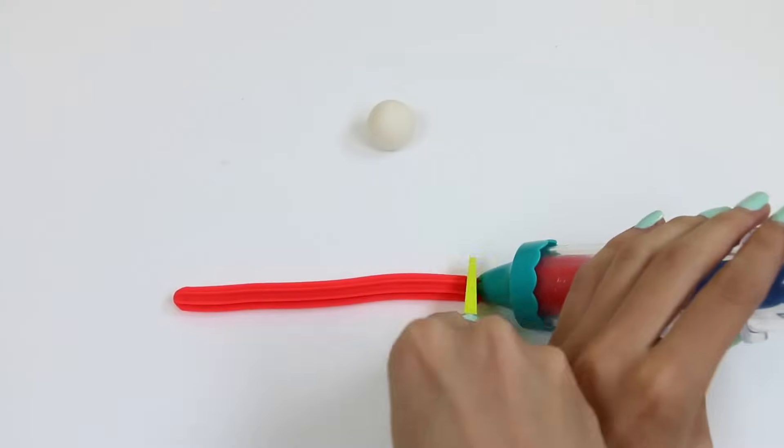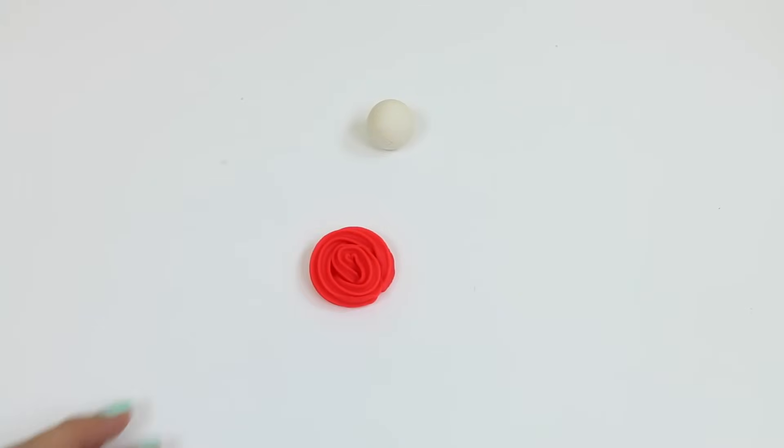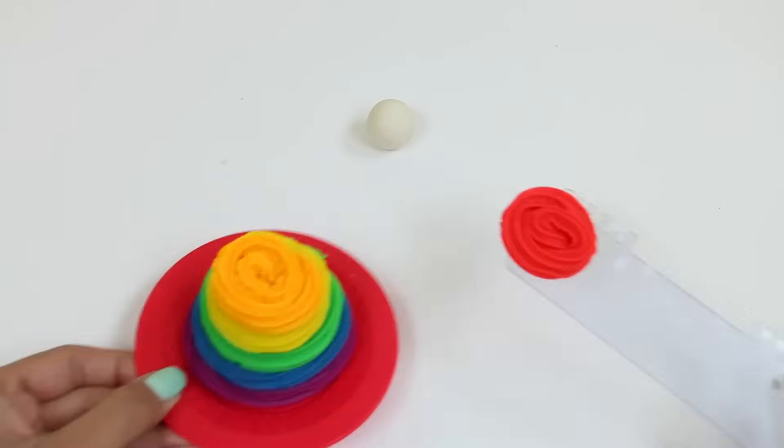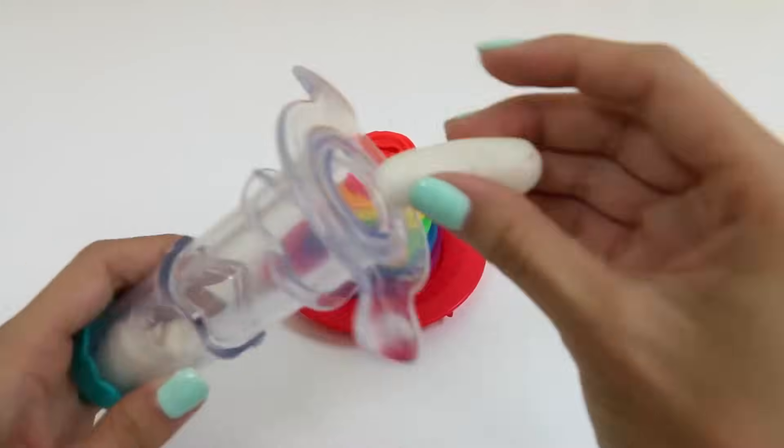This kind of looks like licorice. Now what's an ice cream swirl without some whipped cream on top? This is where the white Play-Doh comes in. We take a little bit of the white Play-Doh and put it in our extruder.